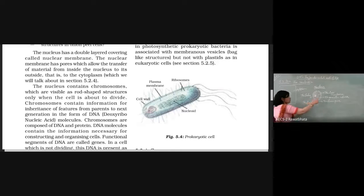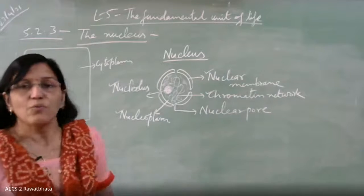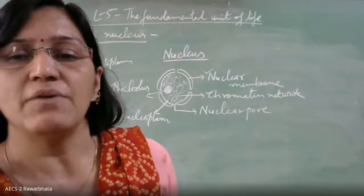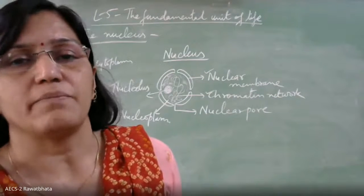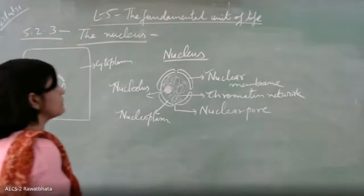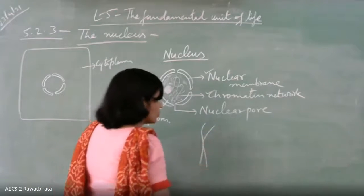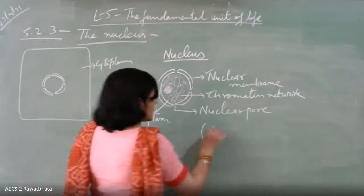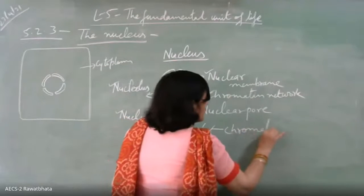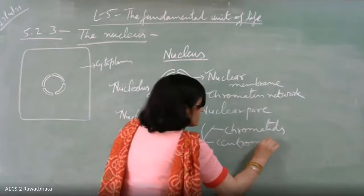This nucleus contains a chromatin network. When the cell is not dividing - which happens most of the time - the chromosomes remain in the form of chromatin network. The chromatin network takes the shape of chromosomes when the cell starts dividing. How do we identify chromosomes? They have two threads joined together - these two threads are known as chromatids, and they are joined together at a point known as the centromere, the point of joining.